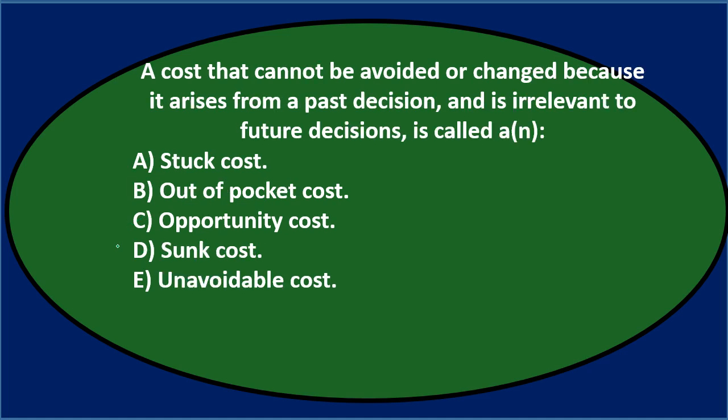Next question: a cost that cannot be avoided or changed because it arises from a past decision and is irrelevant to future decisions is called A, a stuck cost; B, out-of-pocket cost; C, opportunity cost; D, sunk cost; or E, unavoidable cost.